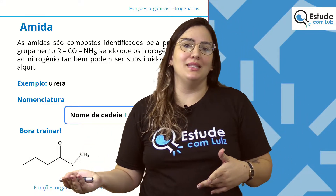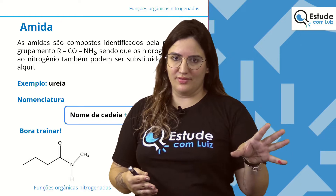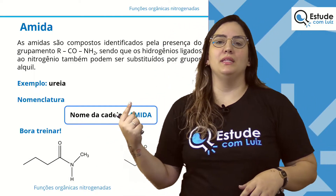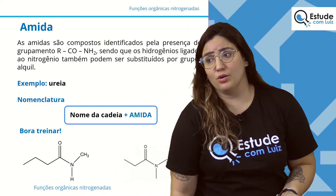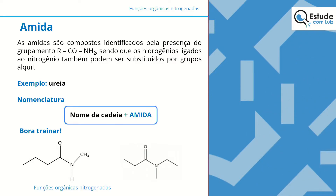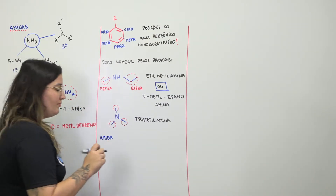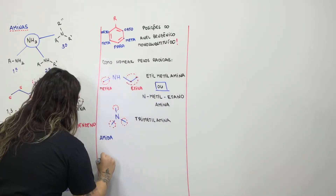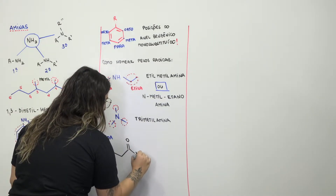A nomenclatura da amida é muito similar à da amina: nome da cadeia mais 'amida'. A diferença é que a dupla C=O com N é função de ponta, de extremidade — então não preciso indicar a posição dela. O que pode acontecer é aparecer uma ramificação. Vamos treinar: aqui eu tenho uma cadeia com quatro carbonos, dupla O, N, e um metil como ramificação.